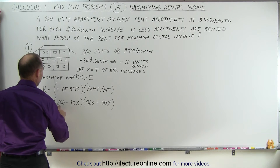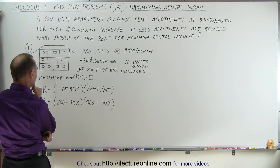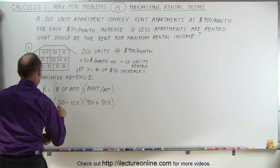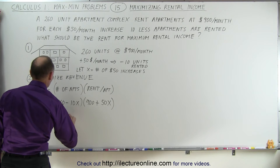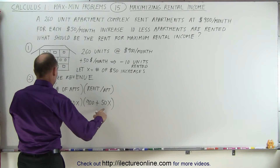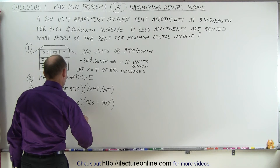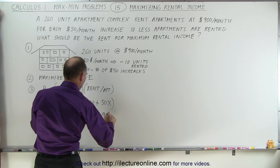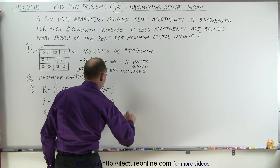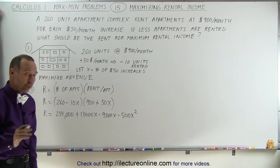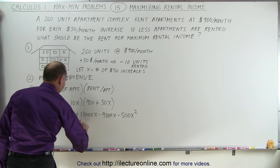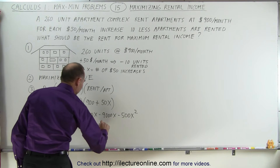Expanding: 260 × 900 = 234,000. Then combining the middle terms gives +4,000x, and the last term is −500x². So the revenue equation simplifies to R = 234,000 + 4,000x − 500x².